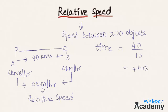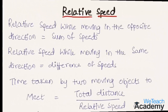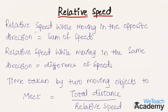Now let us learn the formulas related to this concept. Relative speed while moving in opposite directions is given by the sum of the speeds. Relative speed while moving in the same direction is given by the difference of the speeds. The time taken by two moving objects to meet is total distance divided by relative speed.